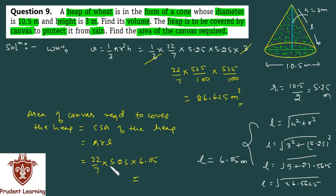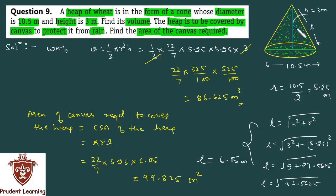Finally, on multiplication you will get 99.825, and since you have found area, the unit is meter square, because dimensions are in meters. Hence, the area of canvas required to cover the heap of wheat is 99.825 meter square. This completes our solution, and with this we come to an end of this exercise. Thank you for watching.